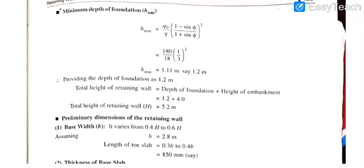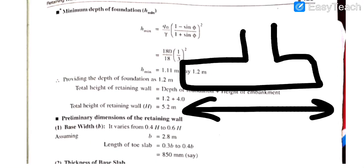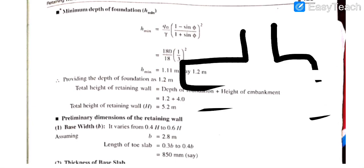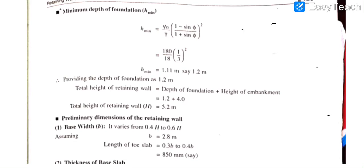Moving further, we calculate the preliminary dimensions of the retaining wall. The base width varies from 0.4H to 0.6H. With H = 5.2 m, we take the average of these two values, giving a base width of 2.8 m. The length of the toe slab (the front projection) is taken as 0.3b to 0.4b, which gives us 850 mm.